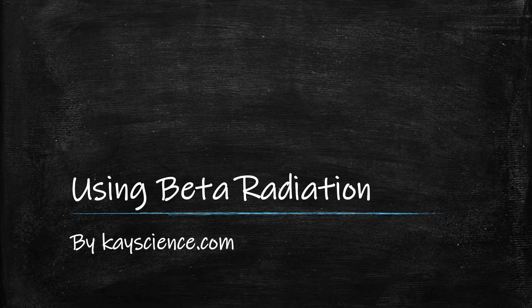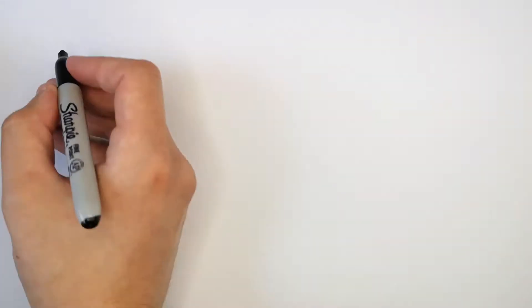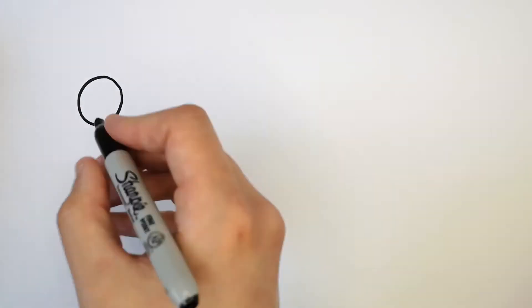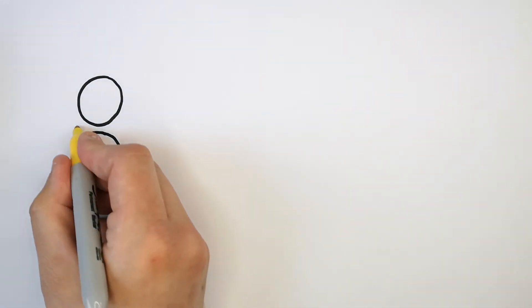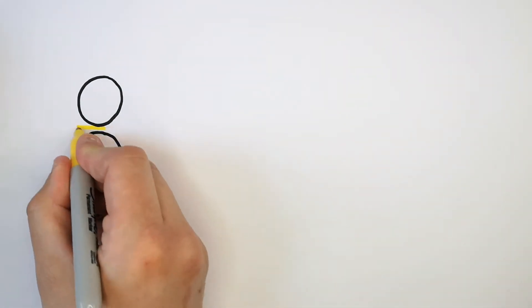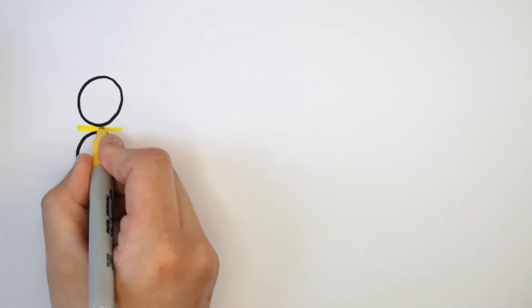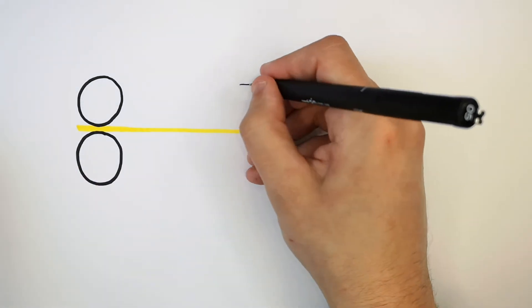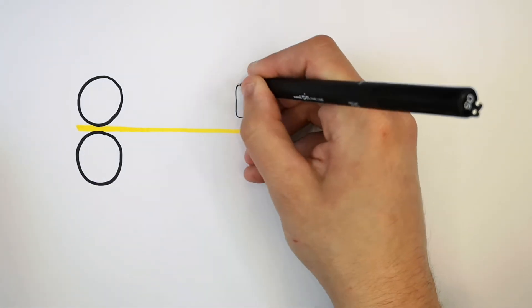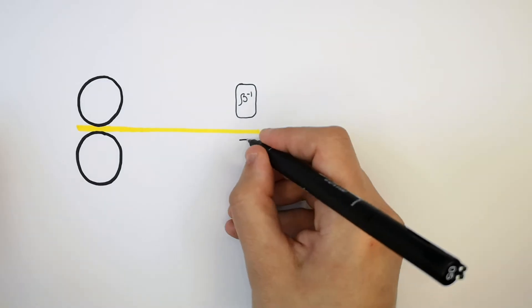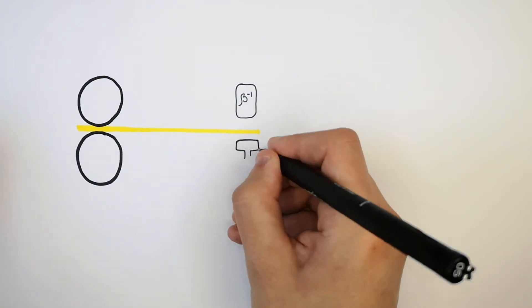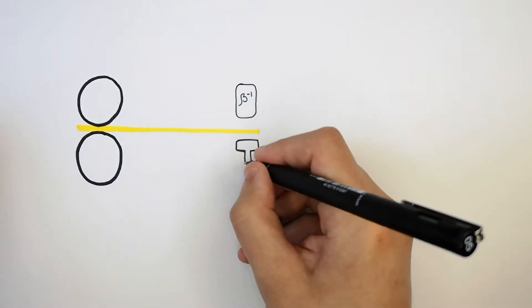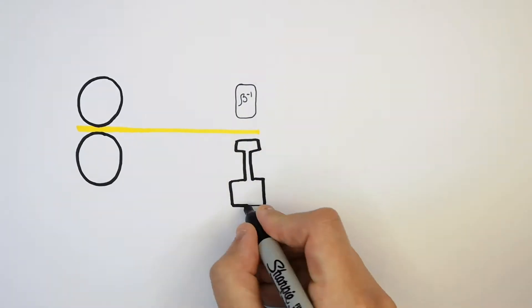Using beta radiation by KScience.com. These here are paper rollers, and paper is fed through them so the paper is going to be rolled to the correct thickness. This here is a beta radiation emitter, and this here is a beta radiation detector.